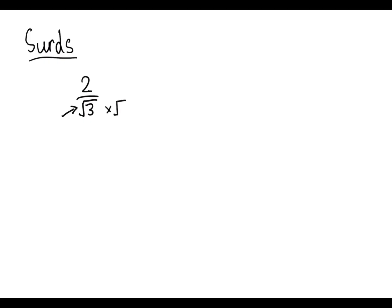So to rationalize something like this, we multiply the top and bottom by what's on the bottom. So we multiply top and bottom by square root of three. So we're left with two times square root of three. And then on the bottom, we have square root of three squared. So the square root and the square are going to cancel each other out. So we're just left with two root three over three.